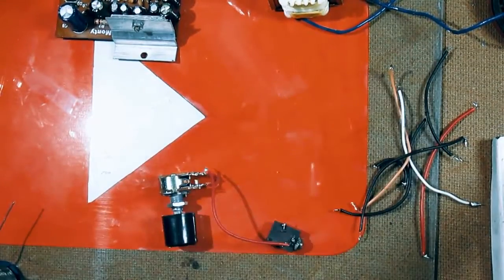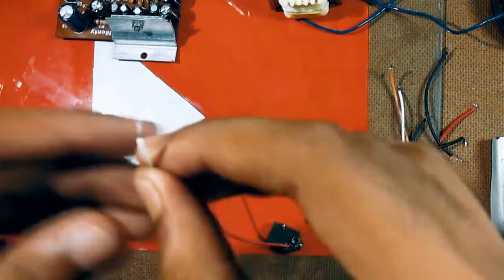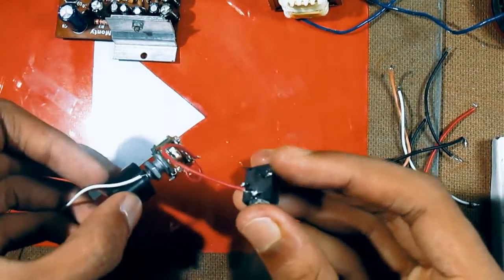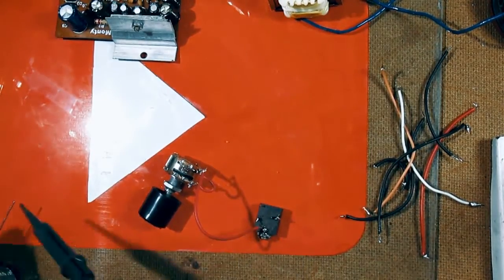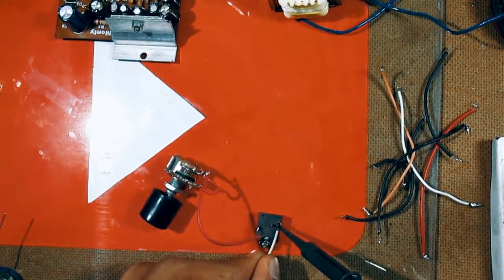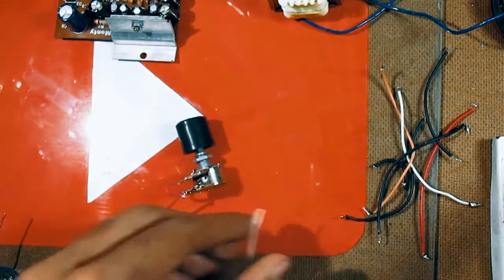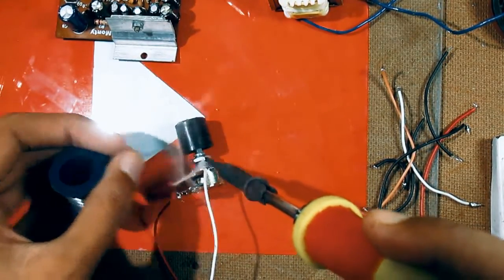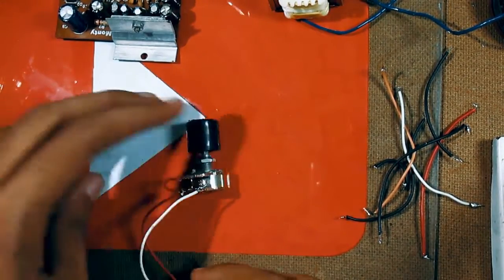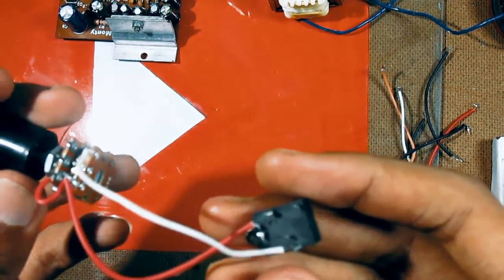Now, next, take a wire and connect any one of the extreme pins of this stereo input jack. And connect it to any one of the extreme pins of this volume control. So, see, this is how you connect the stereo, one of the pins to this volume control.